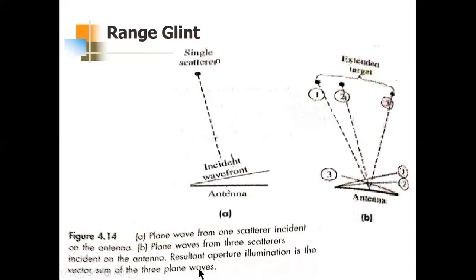The resulting aperture illumination is the vector sum of the three plane waves. These tilted wave fronts add up vectorially and give a composite wave front whose amplitude and phase are completely non-linear. So glint from a complex target is actually a distortion of the echo wave front, resulting in a non-uniform wave front — whereas what we desire is a uniform wave front.